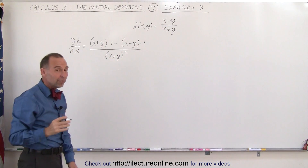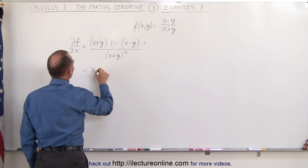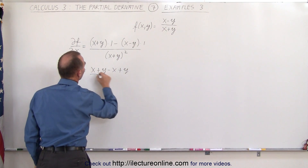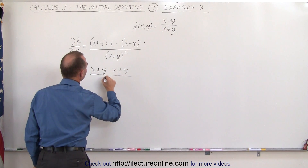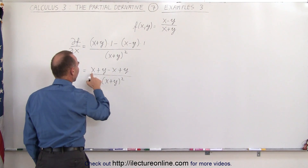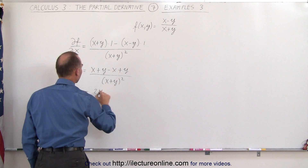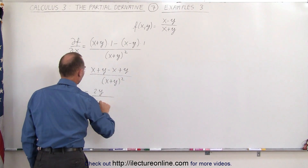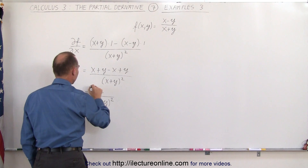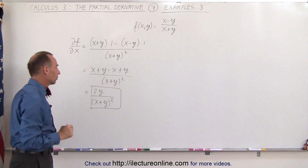Now we have to simplify that and see what we get. This is equal to x plus y, minus x plus y, divided by the quantity x plus y squared. Notice that x minus x — the x's cancel out — we have in the numerator 2y, divided by x plus y quantity squared. And that will be the partial derivative of the function with respect to x.